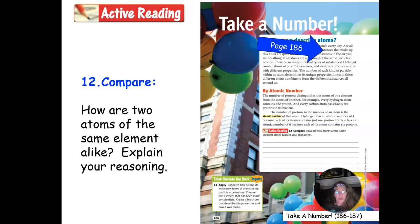Number 12 asks you how are two atoms of the same element alike? Explain your reasoning. First, you want to talk about why atoms are the same and called an element. Then you're going to want to talk about if they were different, this is how they would be different. So really two parts to this question when I ask you to compare.